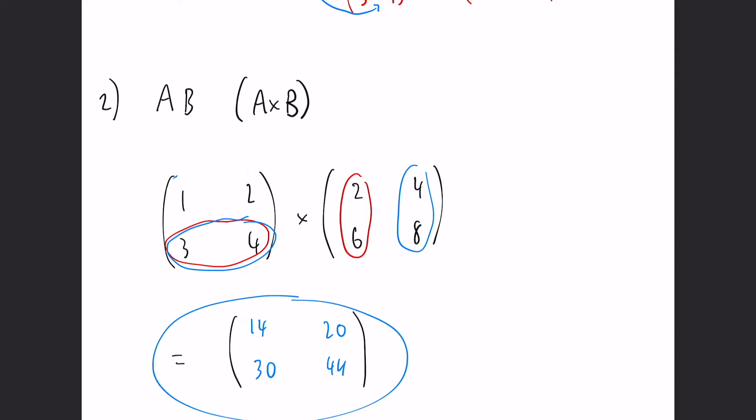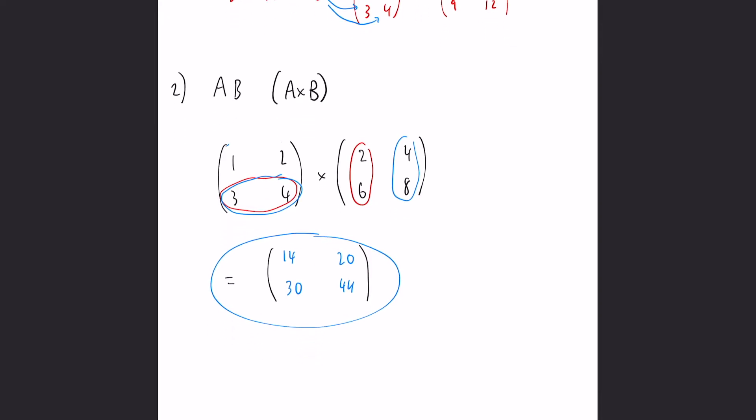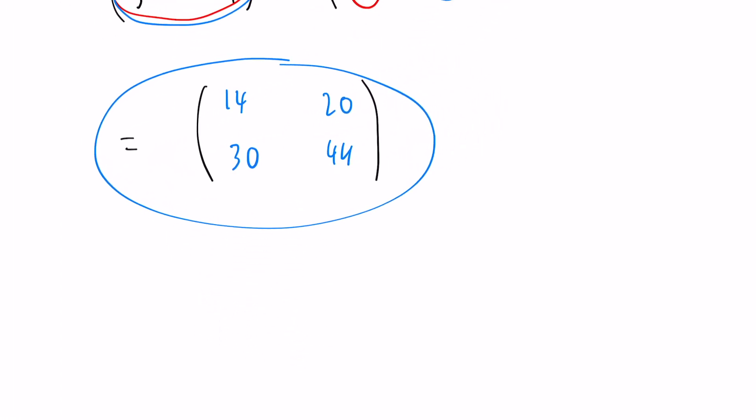In most situations, matrices are non-commutative. That means if we do it the other way around - B times A rather than A times B - they won't give the same answer. Compared to how multiplication normally works where 4 times 3 and 3 times 4 both give 12...